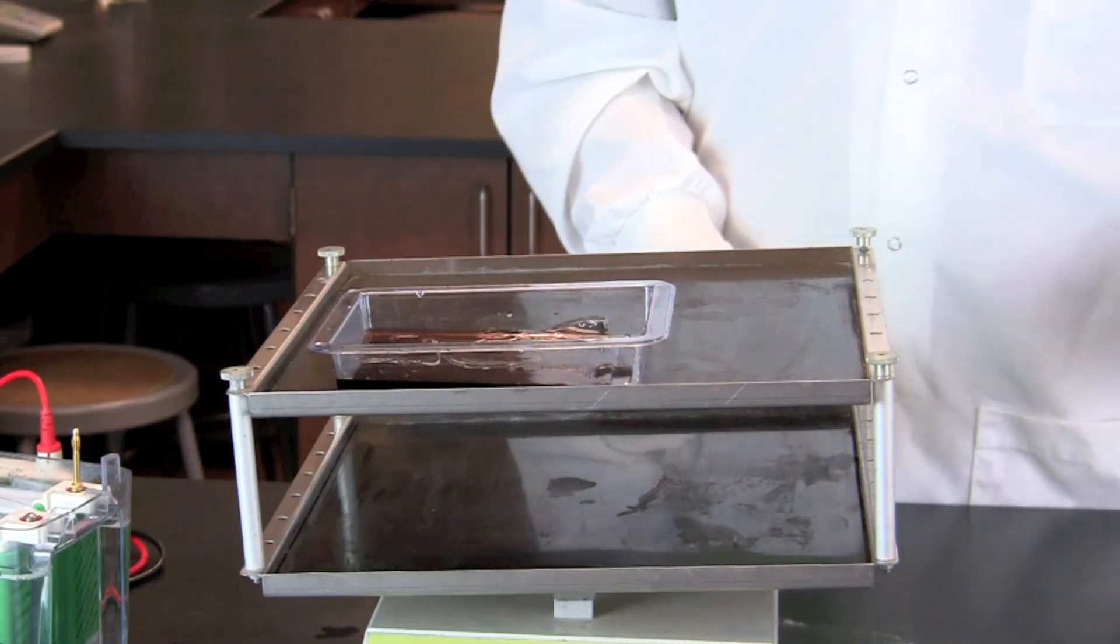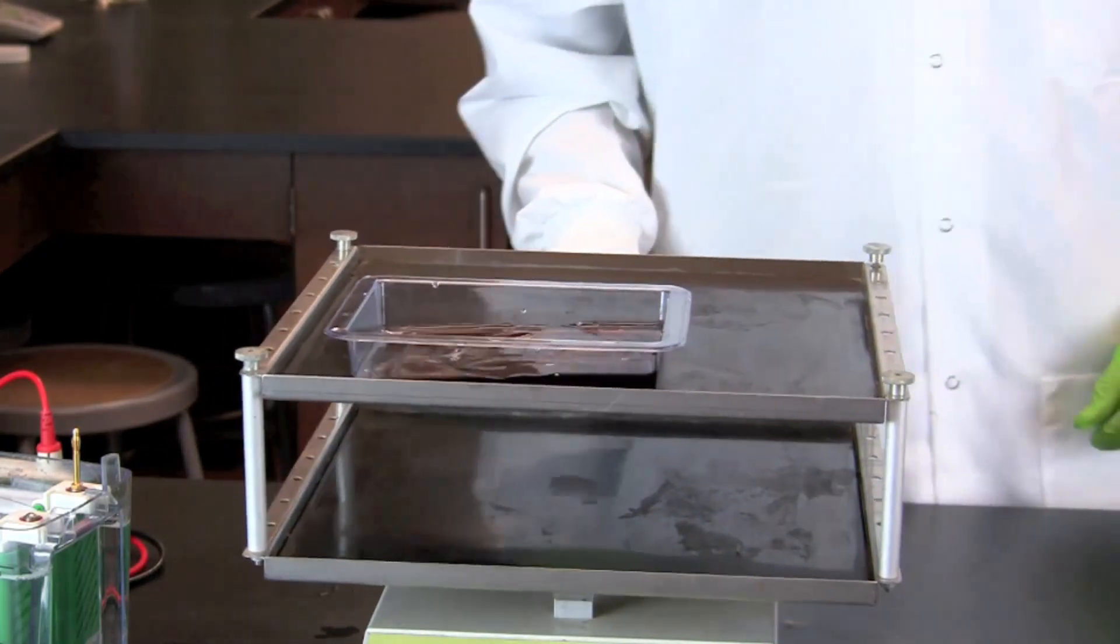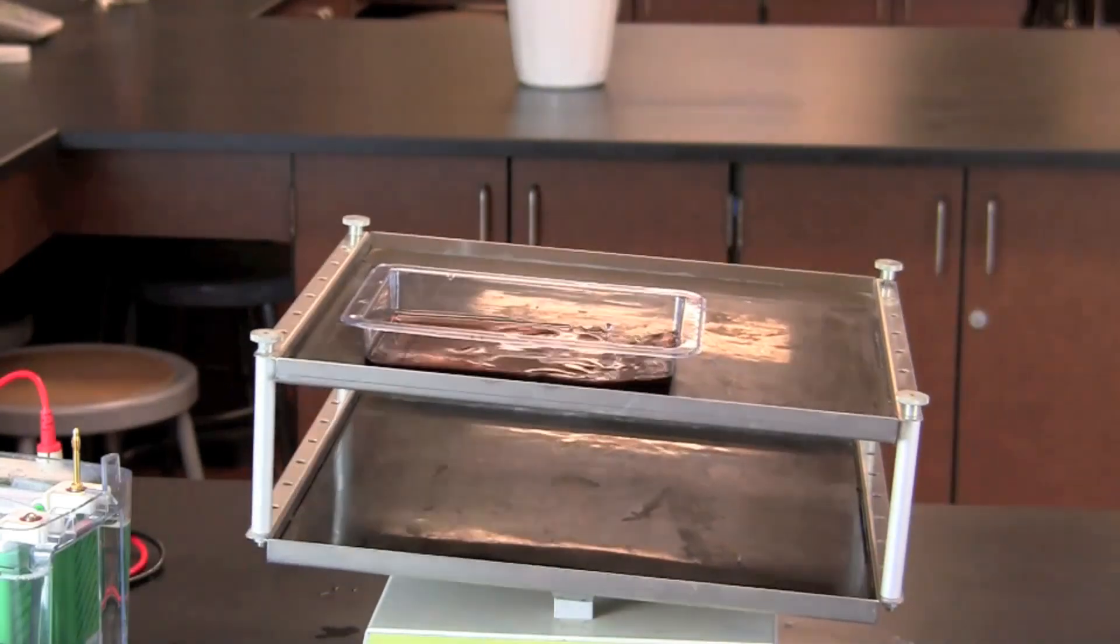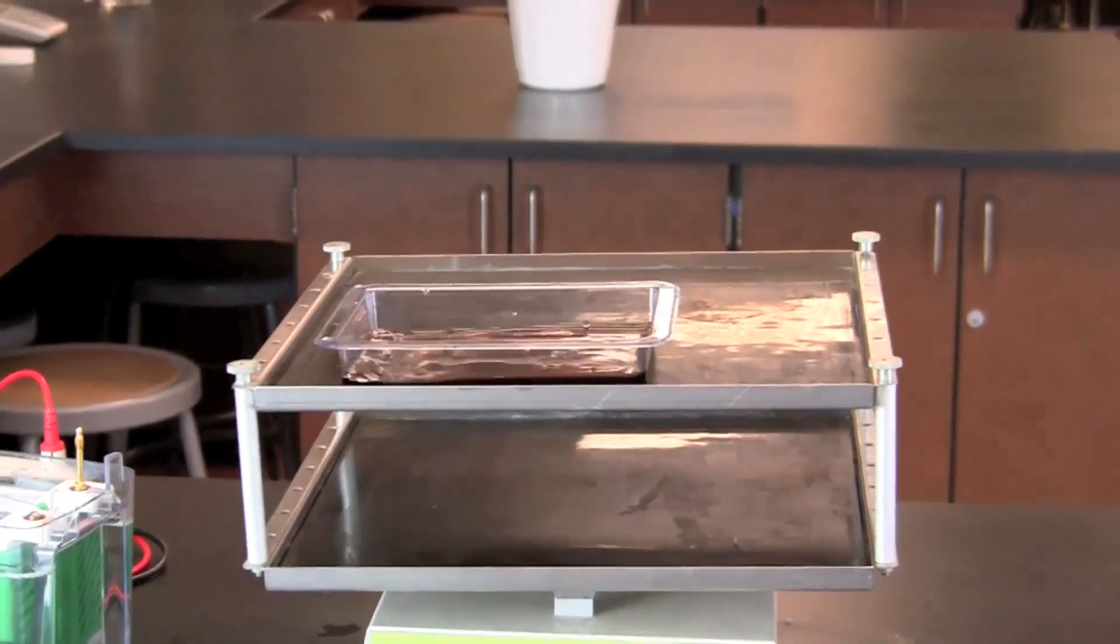After staining, rinse the gels two times in tap water. De-stain the gels in a large volume of water overnight, changing the water at least once. Blue stained bands will be visible on a clear gel after de-staining.